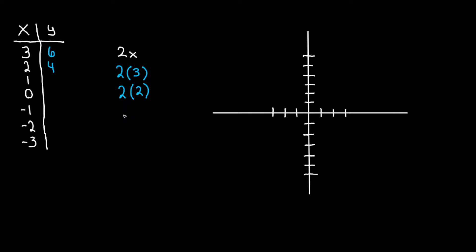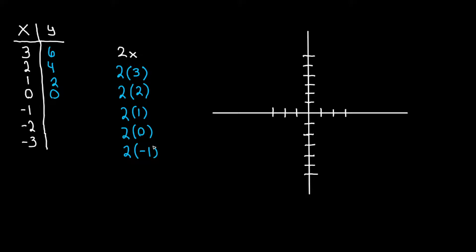Let's say he gives them one dollar — he'll get two dollars out. Let's say he gives them zero dollars — two times zero is zero. Let's say he borrows a dollar — they're going to expect two dollars back, so he'll lose two dollars in the end.